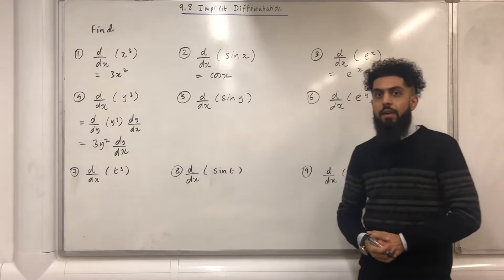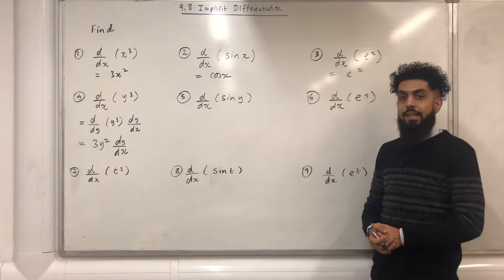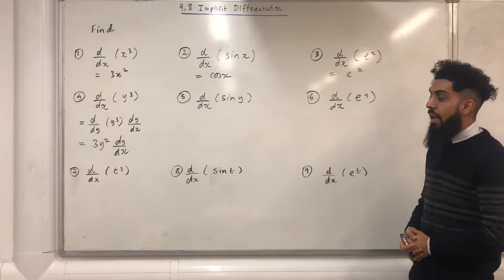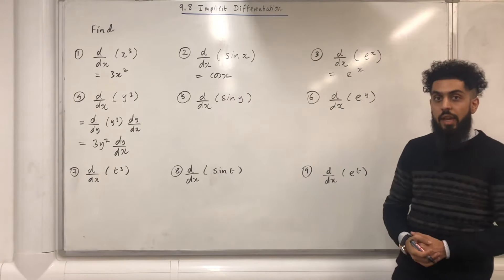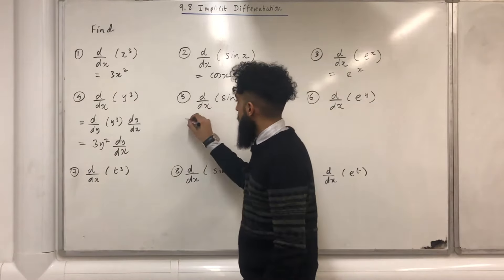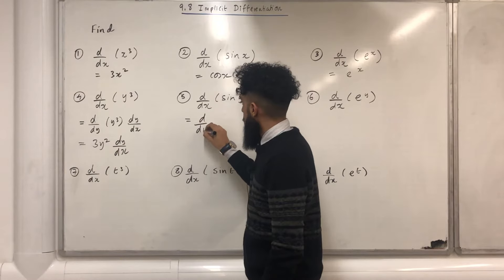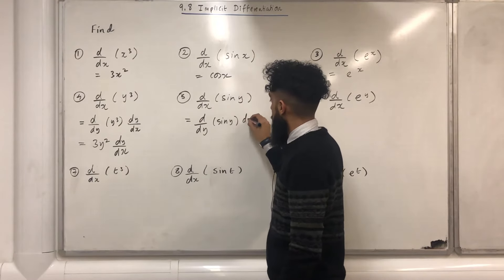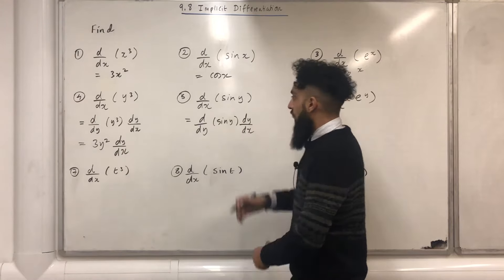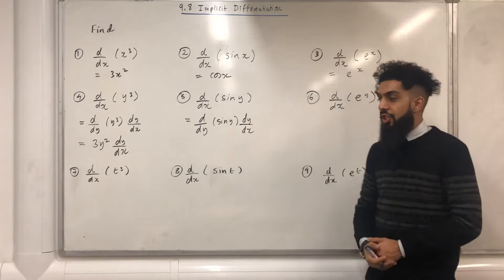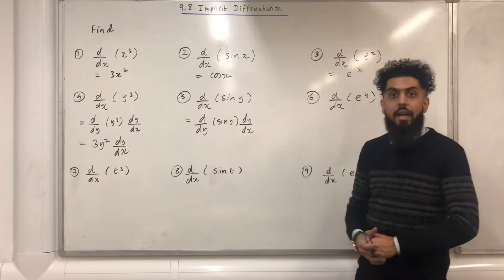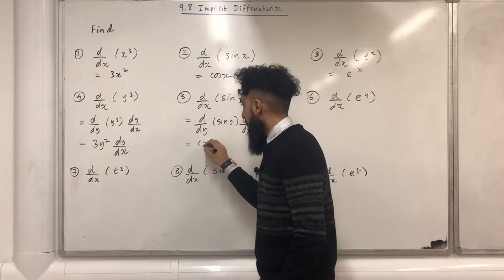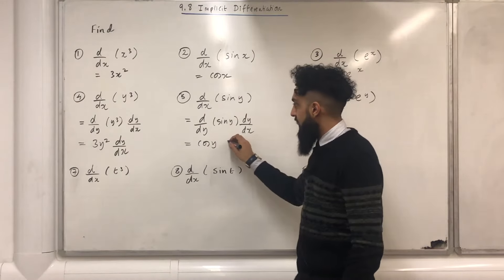Question number five: differentiate sine y with respect to x. Again, I can use the chain rule. If I differentiate sine y with respect to y, I get cos y, and then multiply by dy over dx.